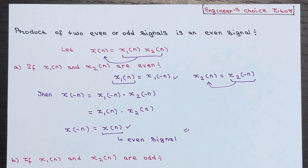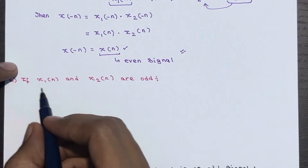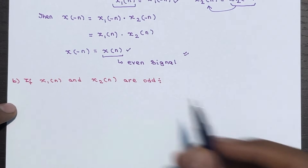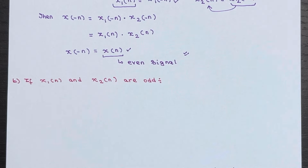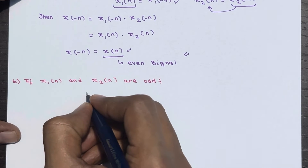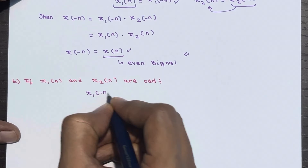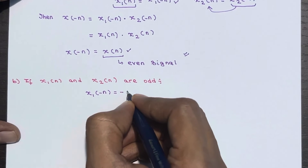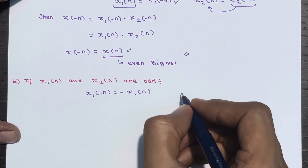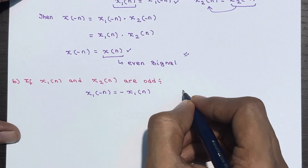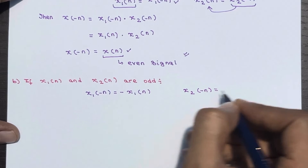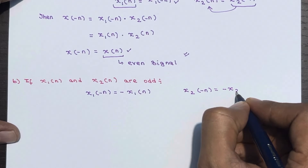Now let's move to the next case. Suppose x1(n) and x2(n) are both odd signals. If they are odd signals, we can write x1(-n) = -x1(n), and for x2(n), since it is odd, we can write x2(-n) = -x2(n).